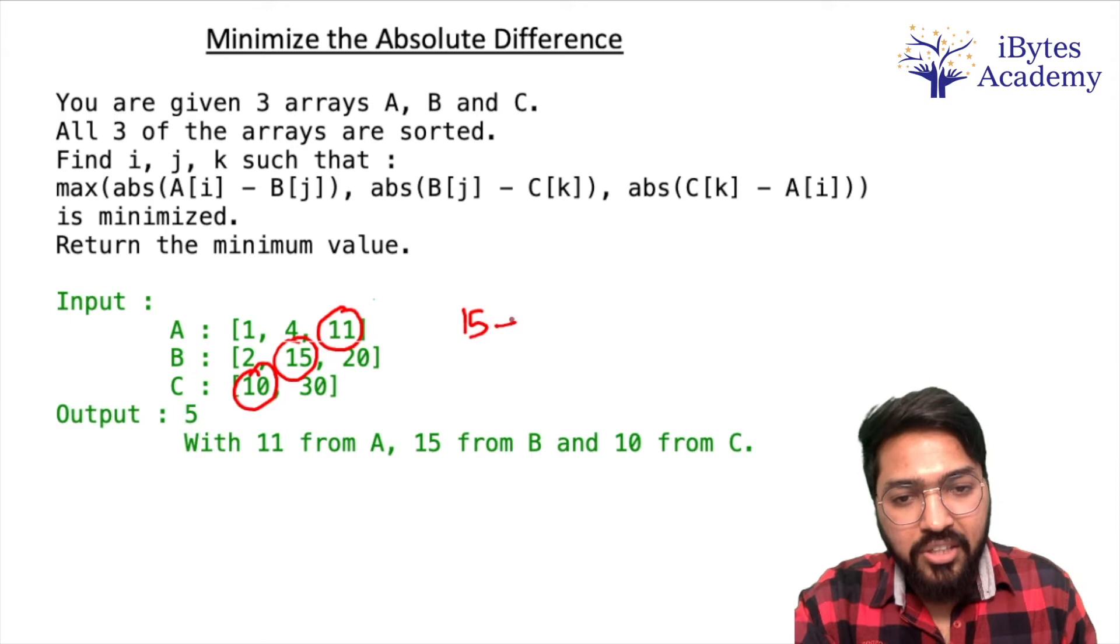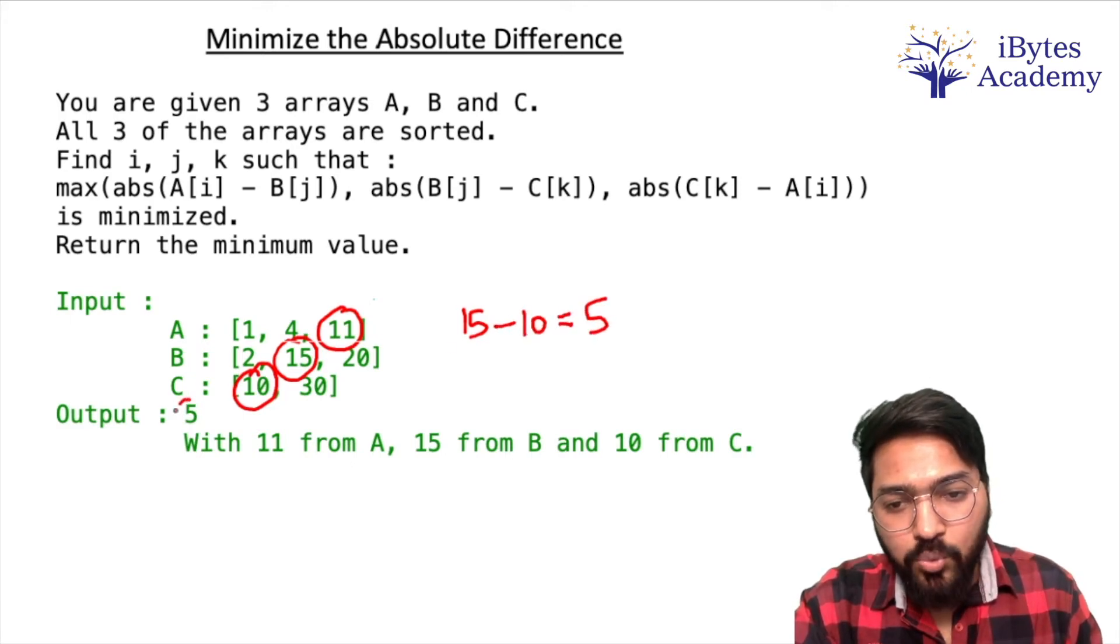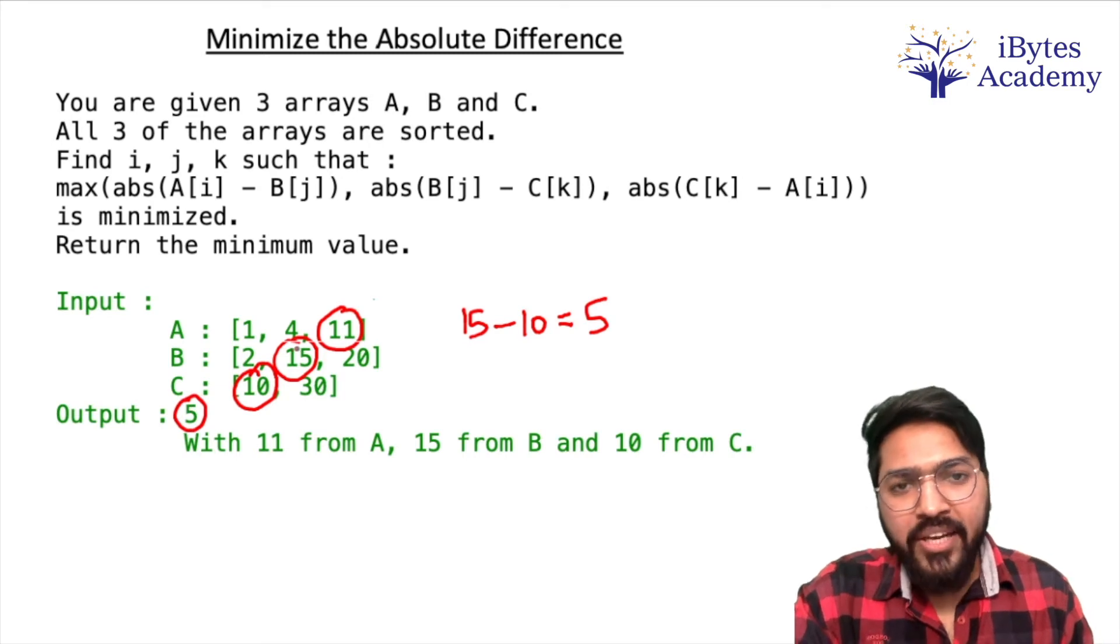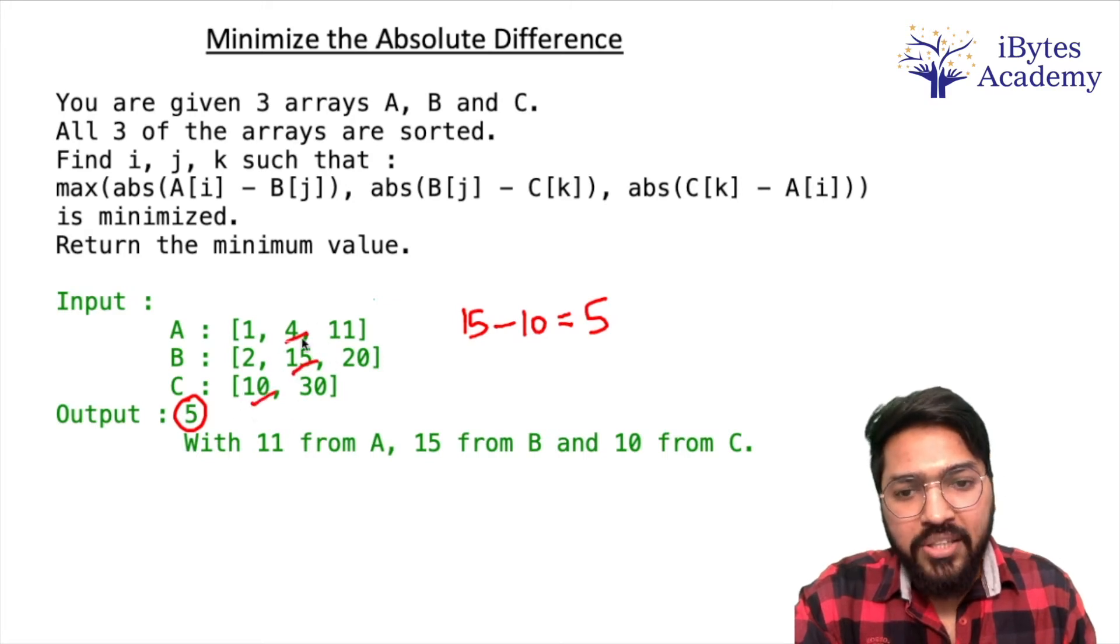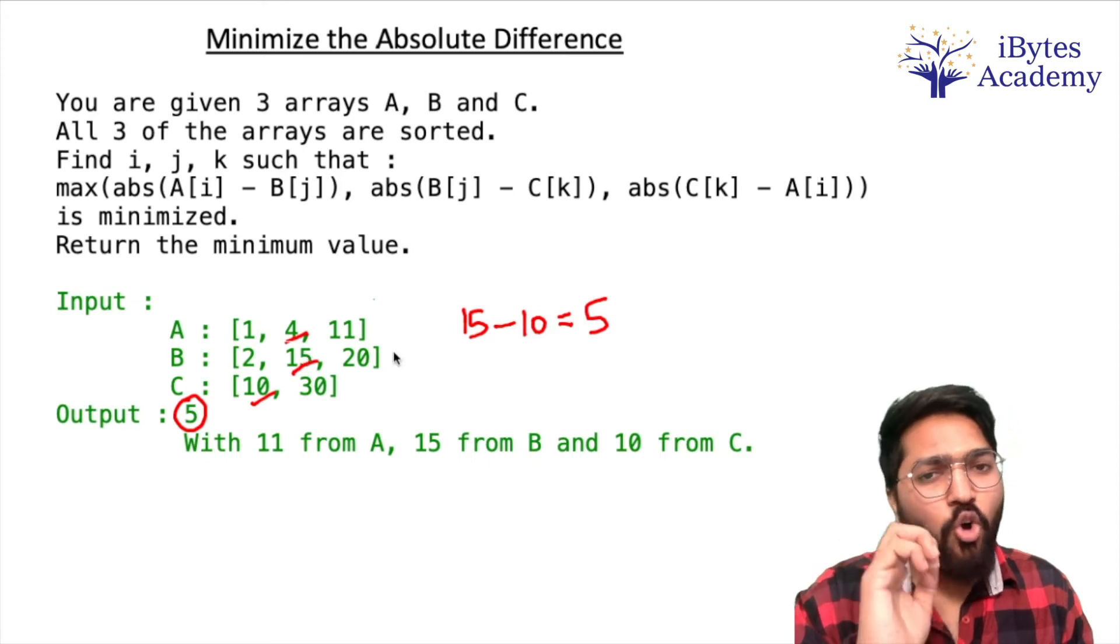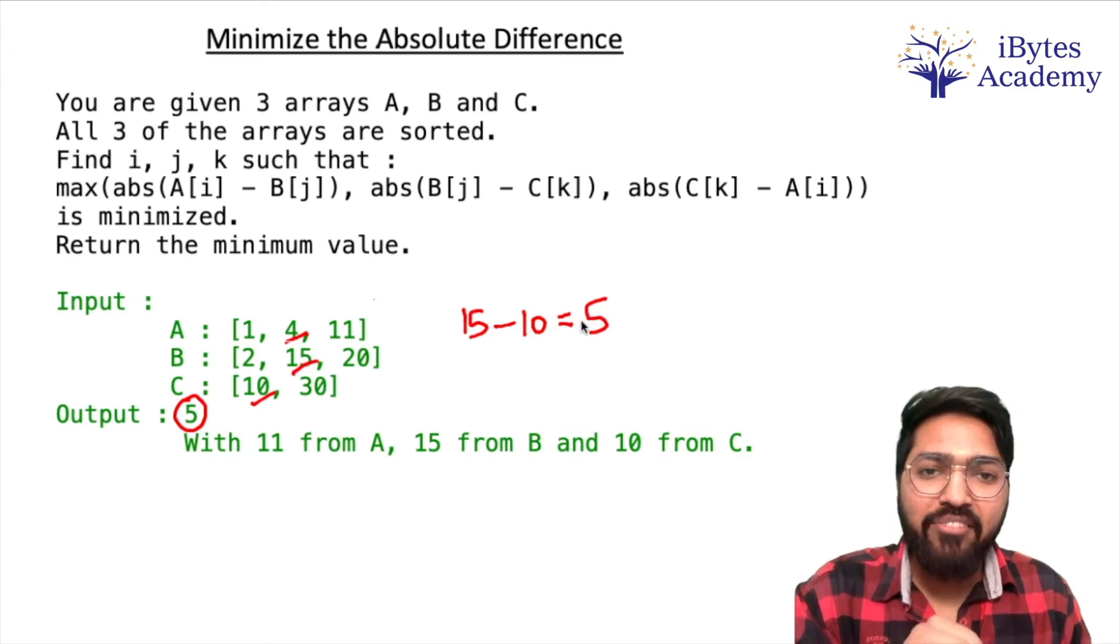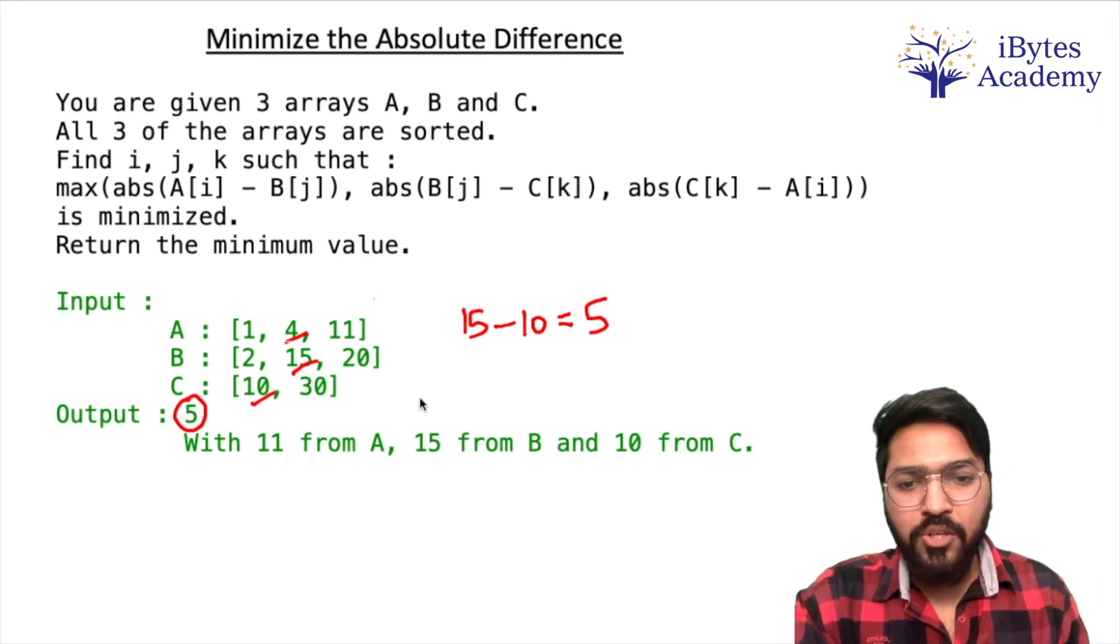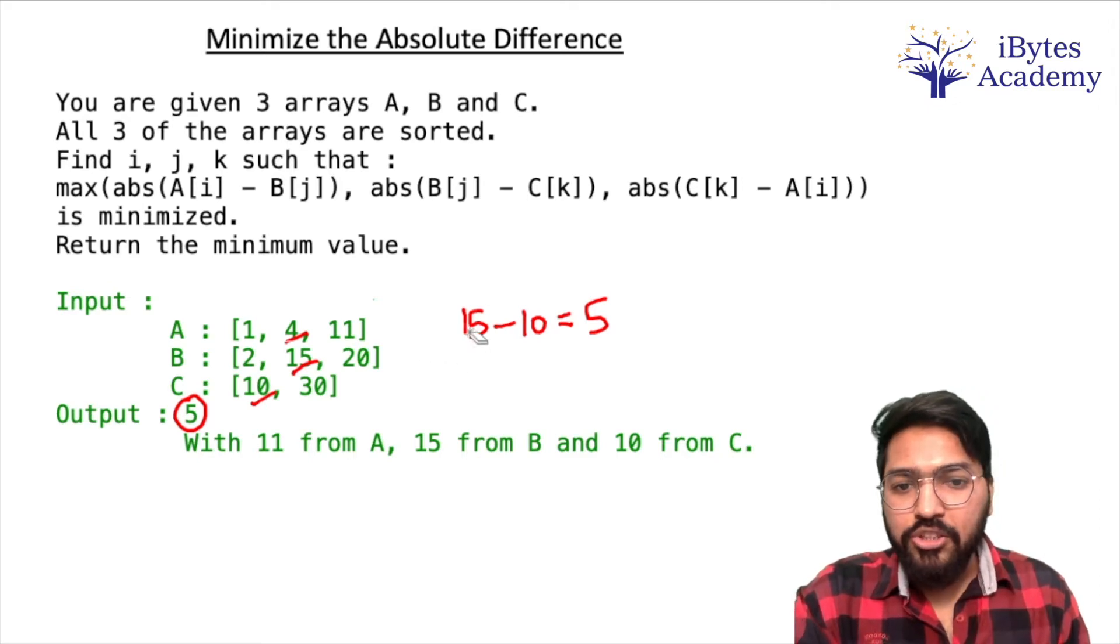Now if I select these three elements, I will get my required answer. That is maximum of these three is 15, minimum of these three is 10, and this is going to give me 5. So 5 should be my output. If I would have taken 4, 15 and 10, then the difference of maximum and minimum number is always going to be greater than 5. So 5 is the minimum possible value. I hope the problem is clear. Pause and attempt it, and then let's look at my solution.